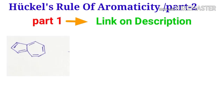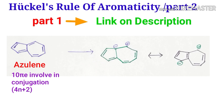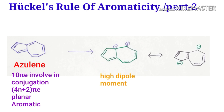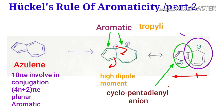Another very interesting system is azulene, where 10 electrons are involved in the delocalization. It is a multiple of 4n plus 2, so it is an aromatic compound. This compound has a very high dipole moment — both rings are aromatic. Here I write down one more resonating structure: this is the cyclopentadienyl anion and the tropylium cation.